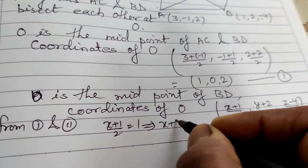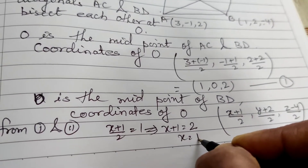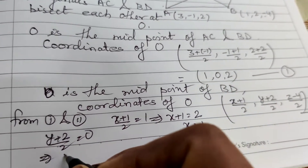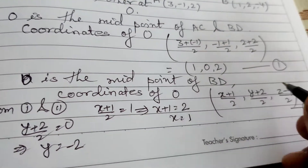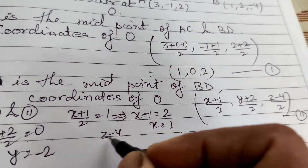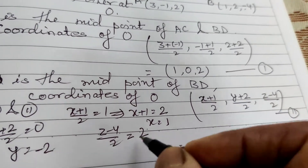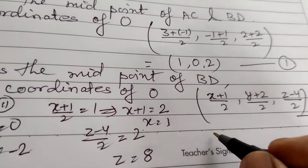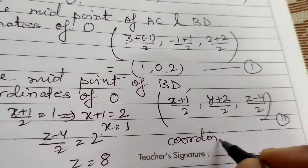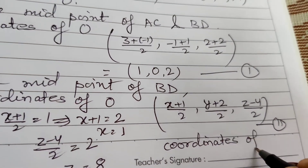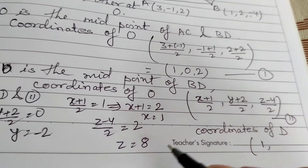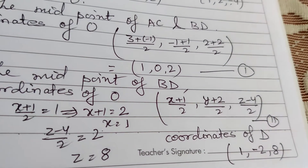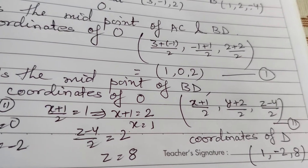Therefore x + 1 = 2, so x = 1. For y: (y + 2)/2 = 0, so y = -2. For z: (z - 4)/2 = 2, so z = 8. Therefore the coordinates of D are (1, -2, 8).